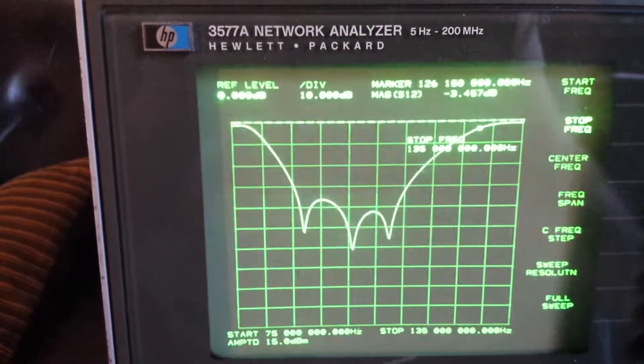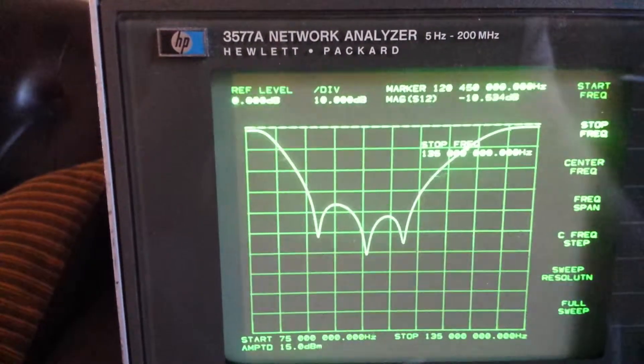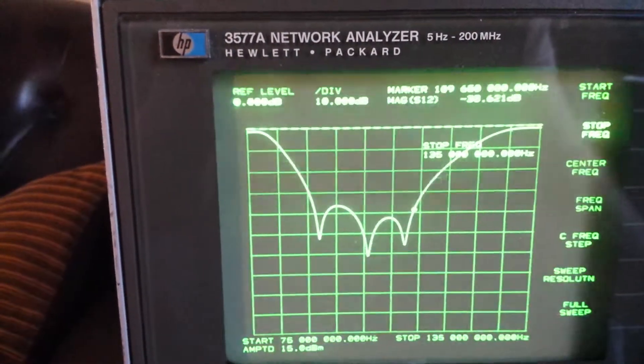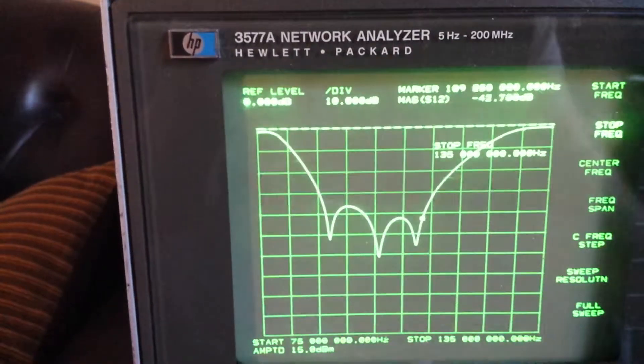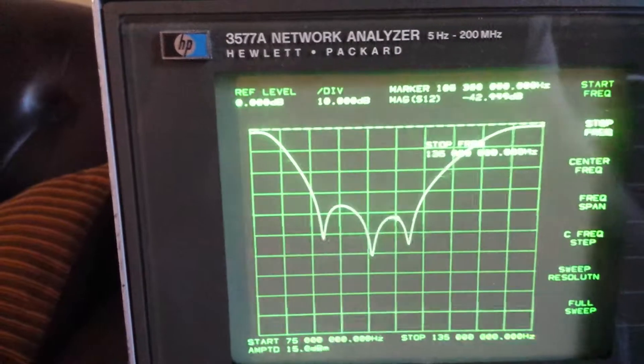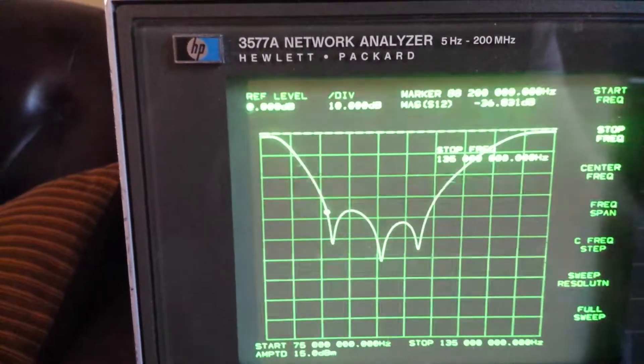So it's a little wider than advertised. It advertises 88 to 108. So at 108, you are down negative 45, it's right around there. And 88, negative 36 or so.